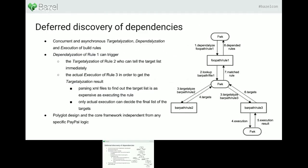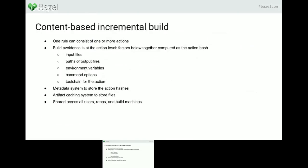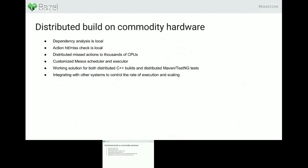We call this approach 'deferred discovery of rule dependencies'. In most build systems today, you parse the dependency, build the DAG, then start execution. In our case, we can't always build the whole DAG upfront. For example, rule one depends on a file — you ask which rule can produce that file, the framework asks all rules in that path for their list of generated files, and rule three may need actual execution to provide that list. We then use content-based incremental builds similar to Google's design, with a metadata system to maintain action hashes and artifact storage, shared across all users — developer builds and CI builds. That's it.